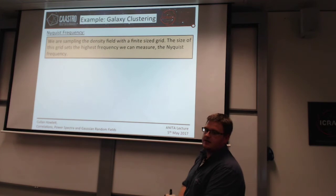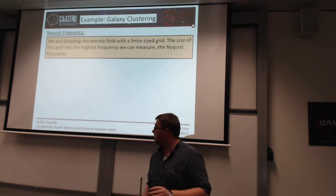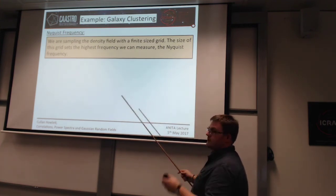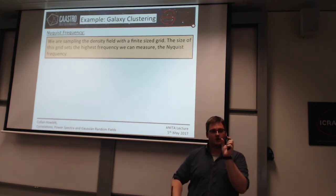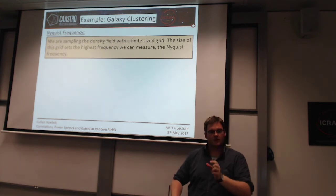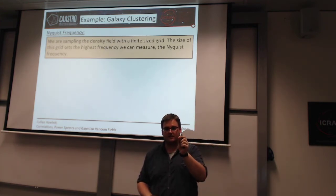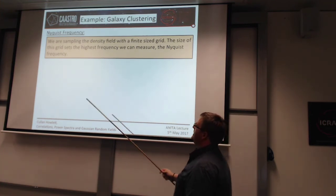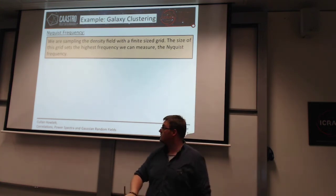Starting with the Nyquist frequency: this is a fundamental property of a discrete Fourier transform done on a grid. When you compute a discrete Fourier transform, the smallest frequency you can look at is determined by the size of each grid cell — you can't look at frequencies smaller than that because you haven't got resolution below that once the data is gridded.